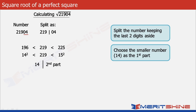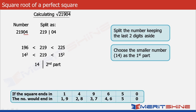The second part is a bit tricky to obtain. I would want you to concentrate on the table given below for a moment. It shows a mapping of unit digits of numbers and the unit digits of their corresponding squares. We can observe that if a square ends in 1 then the number would have either 1 or 9 as its unit digit. Similarly, if a square ends in 4 then we have either 2 or 8. If 9 then 3 or 7, and if 6 then it would be 4 or 6. In our case the square ends in 4, so the number can have either 2 or 8 as its unit digit.